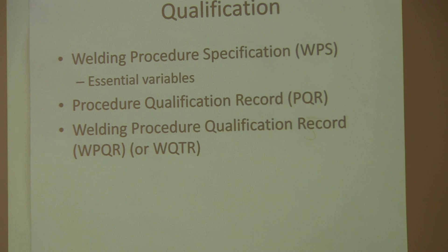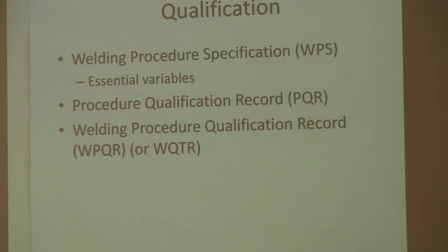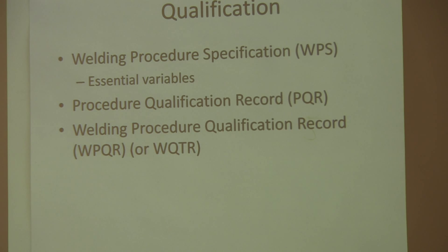The PQR needs to be kept with the weld procedures in order to qualify them. The third type of document is a welding or welder procedure qualification record. That's for the personnel — the people who are making the welds. They also have to be qualified. The code has provisions for what these people need to do in order to weld to your procedures. It's much easier to qualify a welder than it is to qualify a weld procedure, but there are requirements laid out in the code. The acronym is weld procedure qualification record, or weld qualification test record — it basically means the same thing.